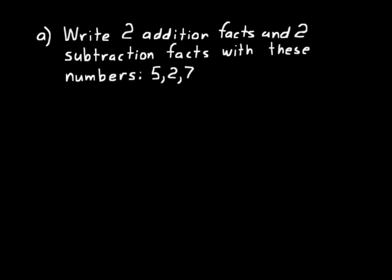Look at practice problem A — it says to write two addition facts and two subtraction facts with the numbers five, two, and seven. We could say five plus two equals seven. And then using our commutative property for addition, two plus five equals seven as well. The order does not matter, so those are two addition facts.